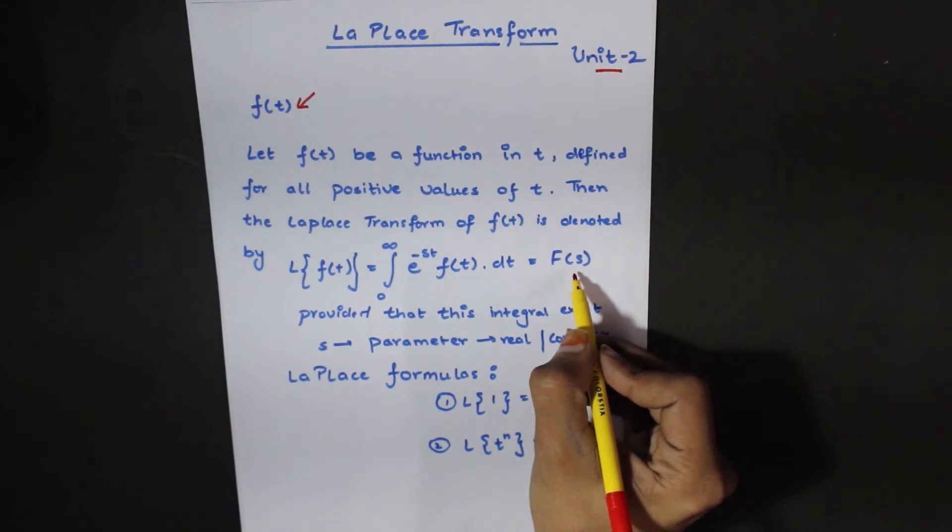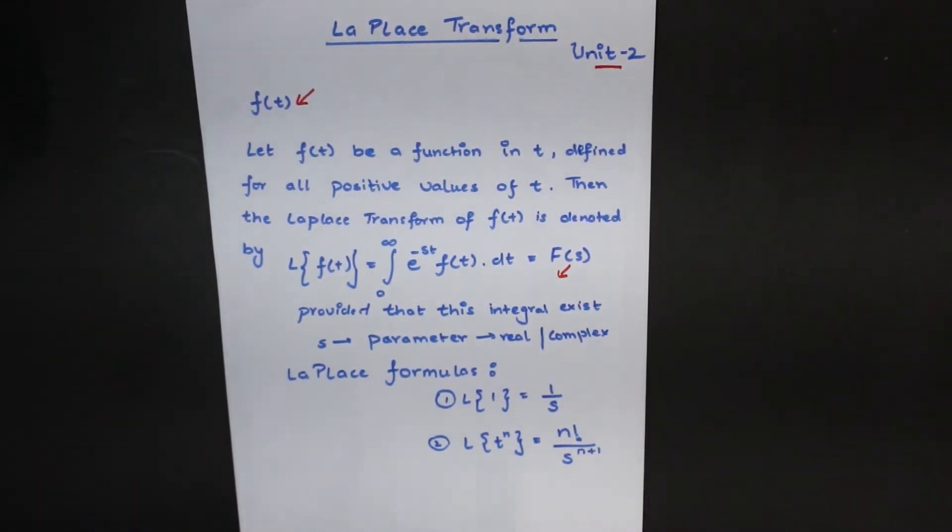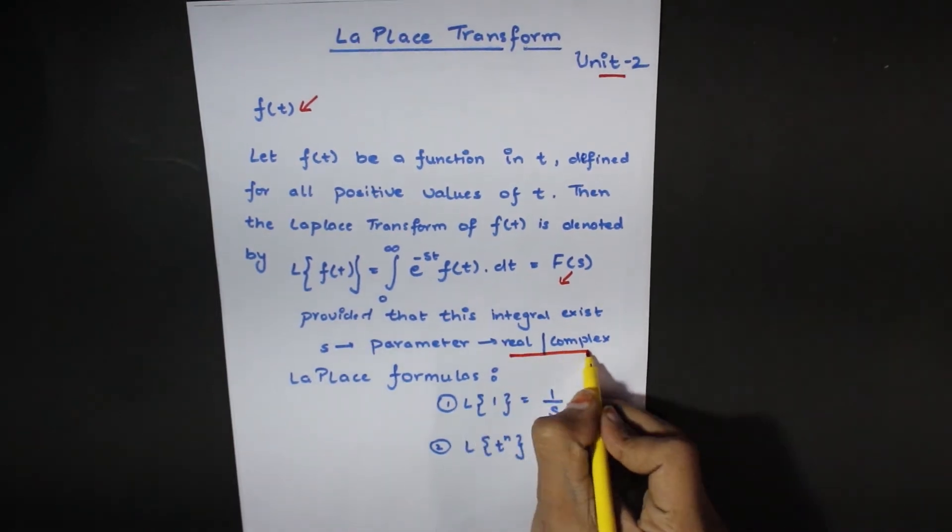The final result is fs. That means the result is function in s. Here we have the most confusion about s. What happens here? Here we take a parameter here. The values can be real and complex.